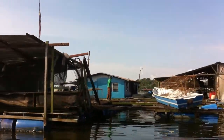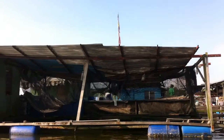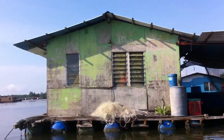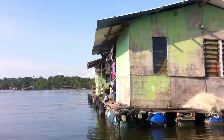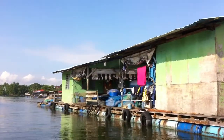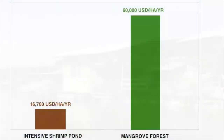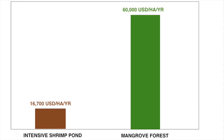For our project, we have mined data from over 60 published studies on the economic value of mangroves and fish and shrimp farms. One such study places the total economic value — when considering all of the factors we listed above — of one hectare of mangrove at $60,000 US dollars per hectare per year.